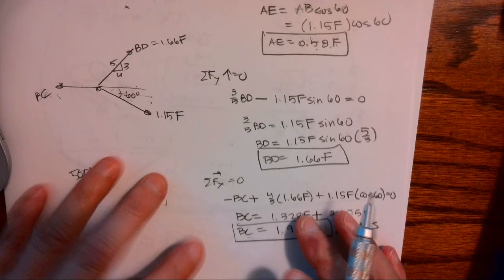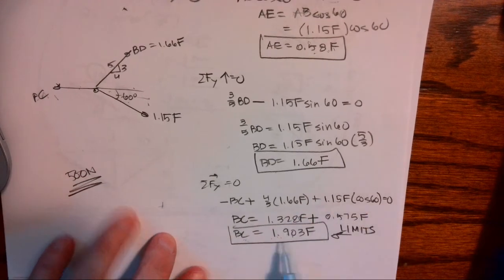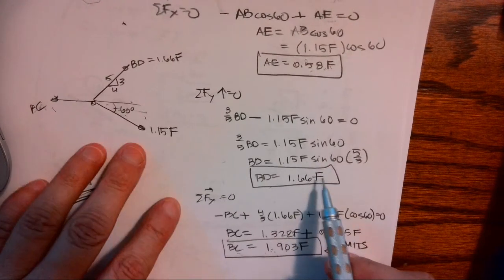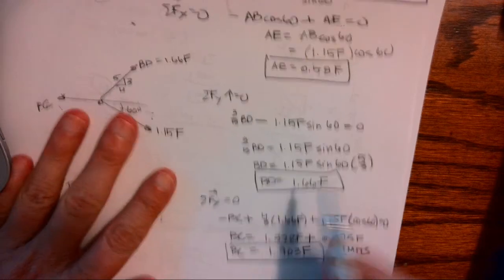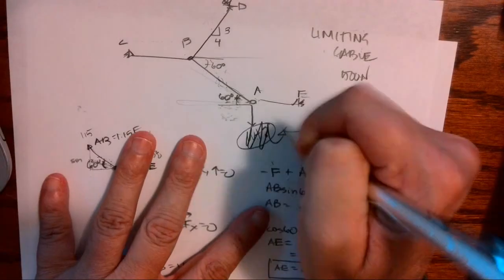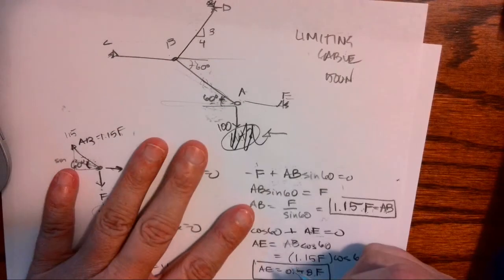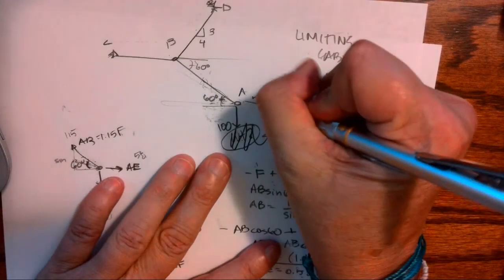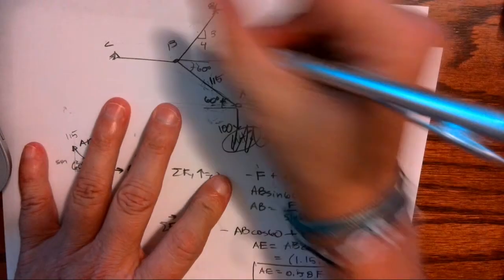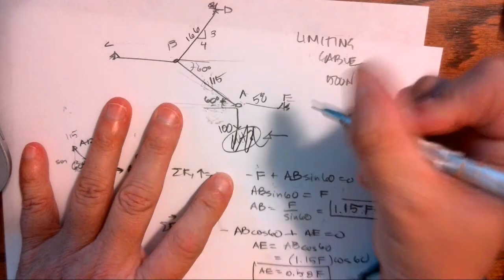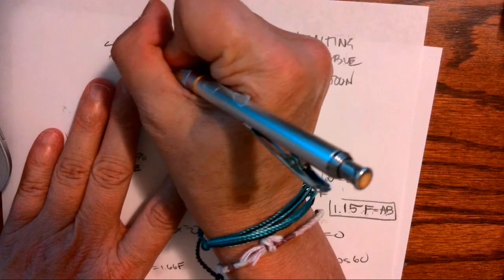If F was a hundred, BD is carrying 166. Okay, so let's just kind of look at that. This is a hundred pounds or a hundred Newtons, then this was carrying 58, this is carrying 115, this is carrying 166, and this is carrying 190.